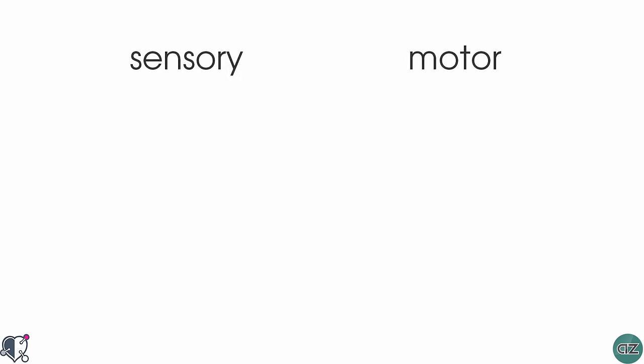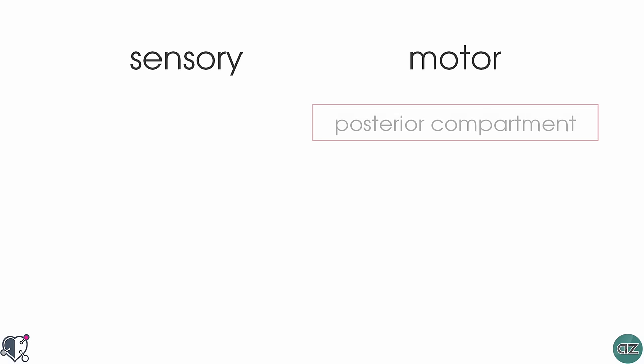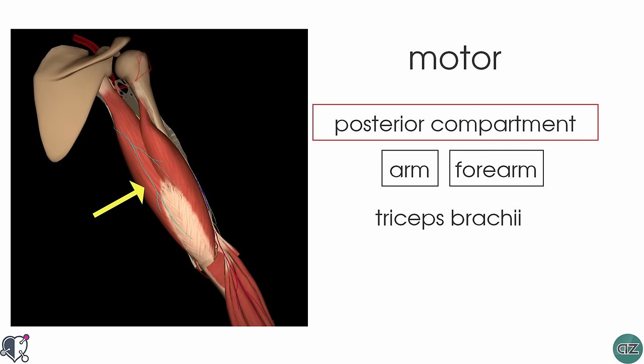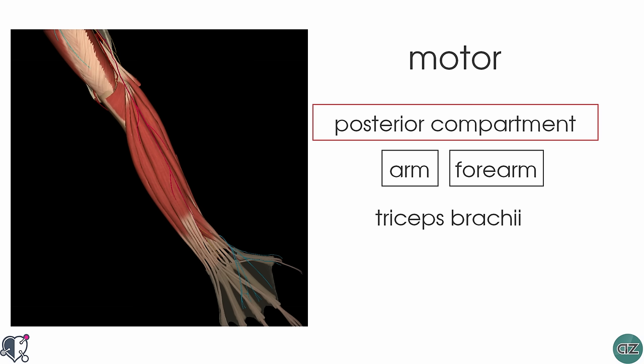The radial nerve has both sensory and motor function. In terms of motor function, it is essentially responsible for innervating the muscles of the posterior compartment of the arm and the forearm. In the arm, this means it innervates the triceps brachii, which is responsible for extension at the elbow joint. In the forearm, it innervates the majority of the extensor muscles and is therefore responsible for extension of the wrist and the fingers, and is also involved in supination of the forearm.